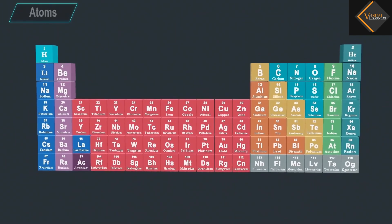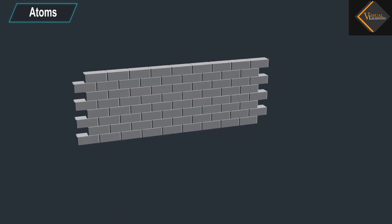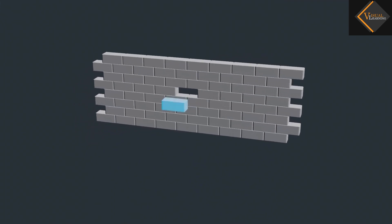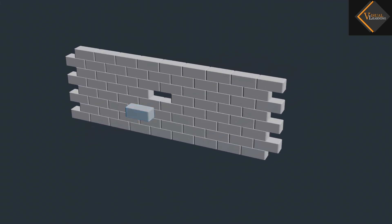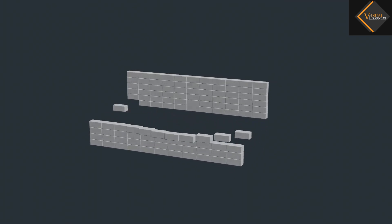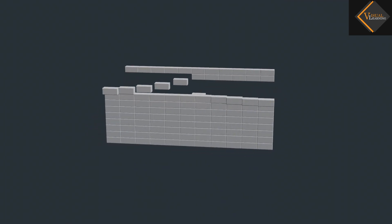In this video, we will understand atoms. Imagine a wall made of bricks. These bricks are the building blocks of the wall. These bricks are arranged in a certain way so that the wall is constructed in a definite shape and a definite pattern.